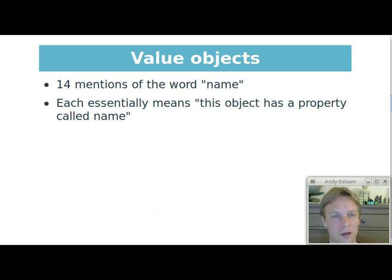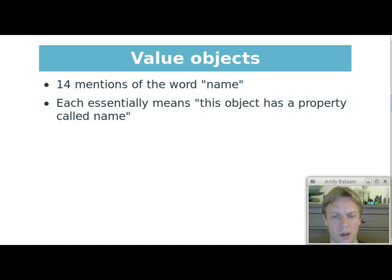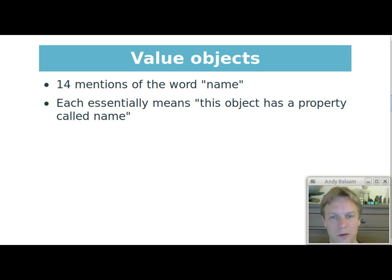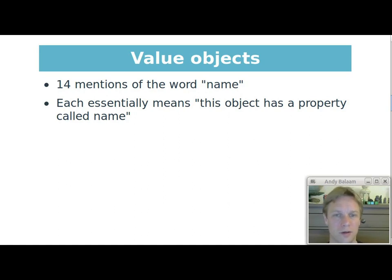That class has 14 mentions of the word 'name' — 13 lowercase, one camel case. Every time we mention the word 'name', what we essentially mean is: this object has a property called name. We say that at the beginning with the field declaration, then with the constructor parameters — saying the same thing again — then with the hashCode function where we use name, again saying the same thing: this object has a property called name, over and over. This is a pattern we follow in Java because we've found it's a good way of making an object.